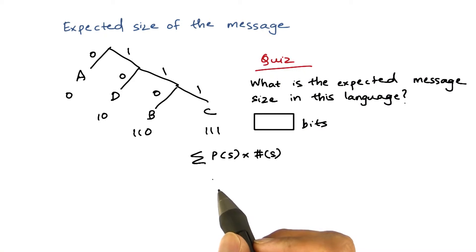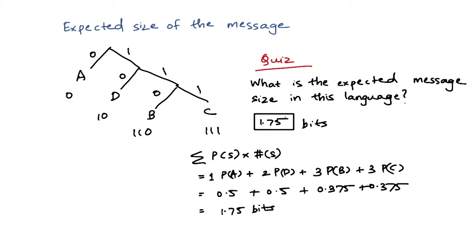This is going to give us 1.75 bits on average. Since we had to ask less questions in this language than the previous language, this language has less information.